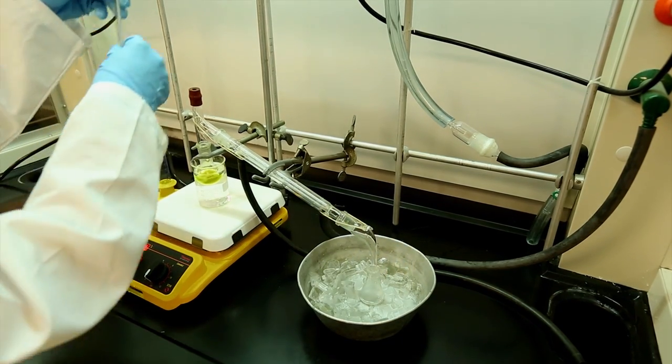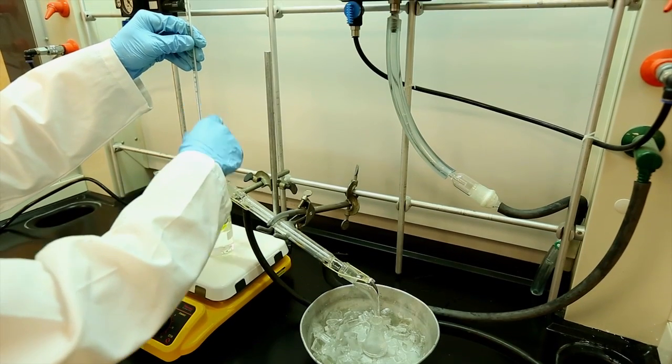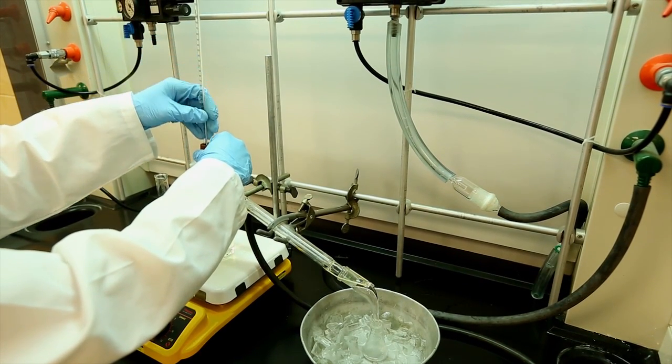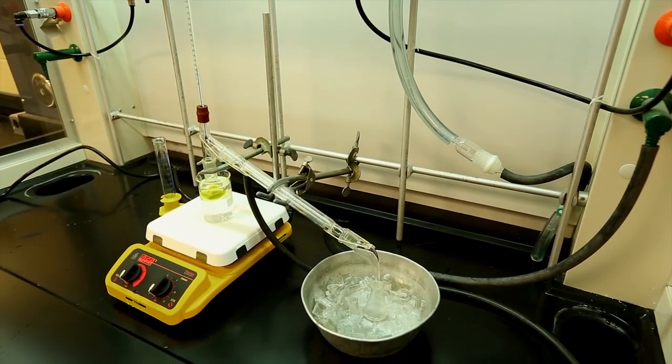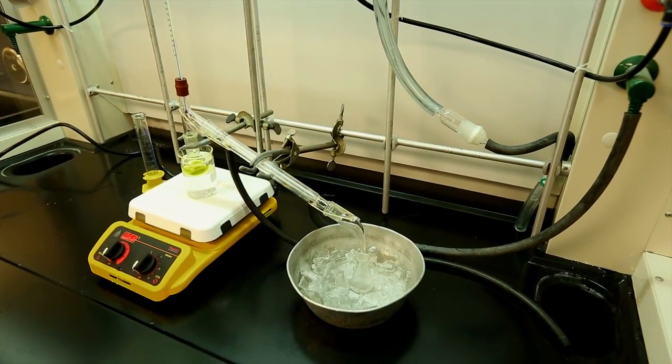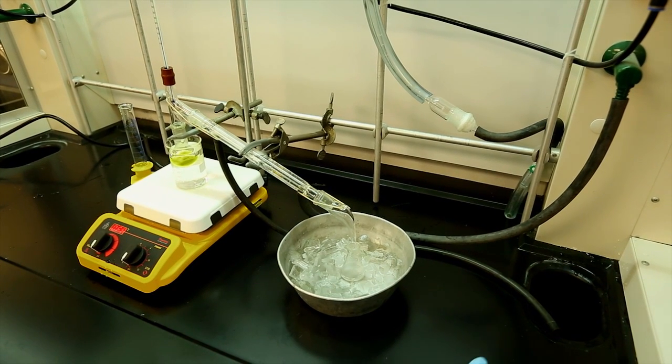Choose a receiving vessel that minimizes evaporation such as an Erlenmeyer flask which has a small opening. This is crucial when the distillate is the desired product. Also, the receiving flask should rest in an ice bath where the water reaches a level of the flask corresponding to the volume of distillate.